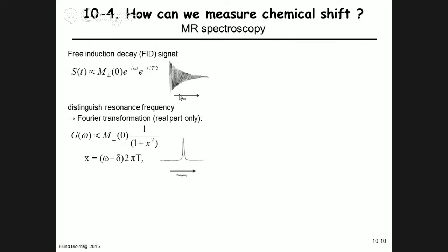If we take the Fourier transform of the FID signal, we get g(ω). The function is maximum at ω = δ, which is the chemical shift. The full width at half height of the resonance is given by 1/(π × T2), so the width of a signal carries information about T2.